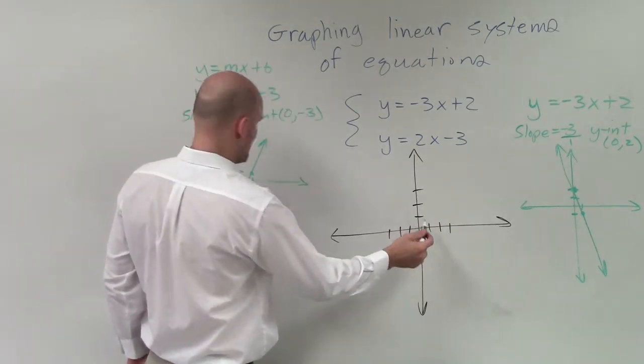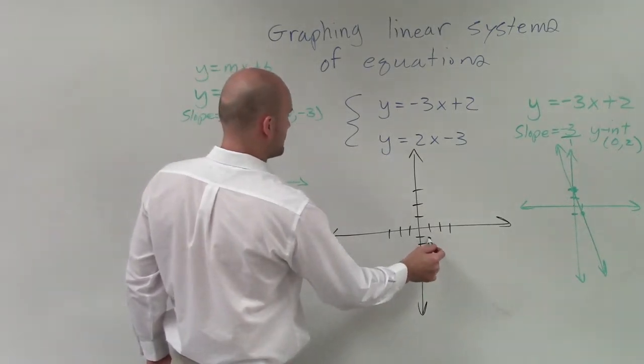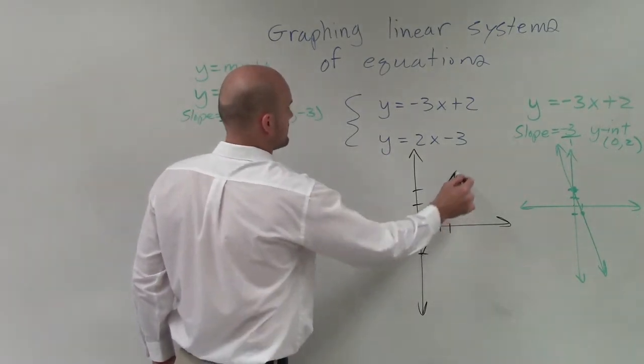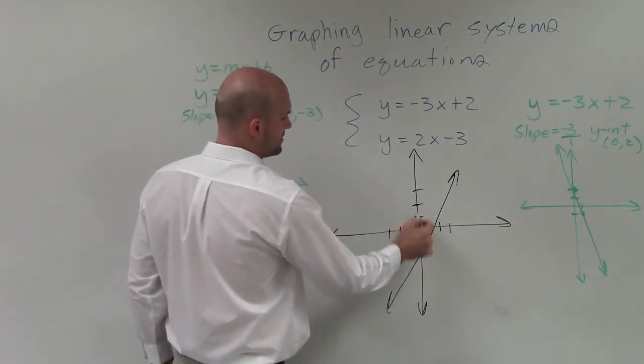And when putting them on the same graph, I have 3, negative 3, up 2, over 1. And then here I have up 2, down 3, over 1.